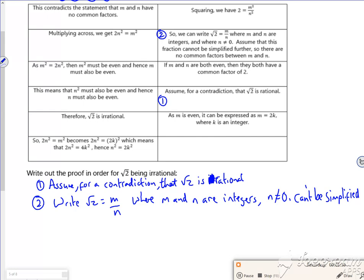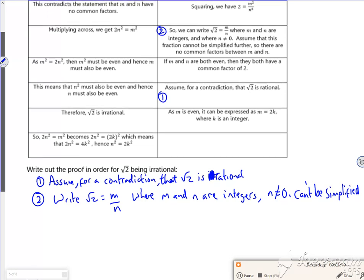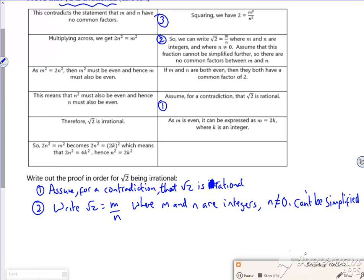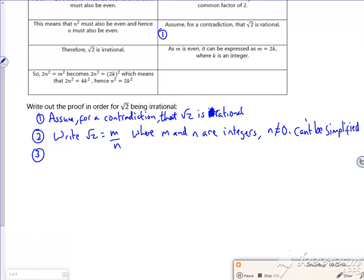Right then, so then what am I going to do? I'm going to square it. I'm going to get rid of the root two. I'm going to square it. So that's the one above it. So I'm going to square it. So two is m squared over n squared.